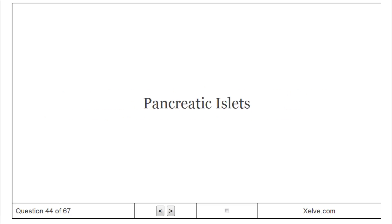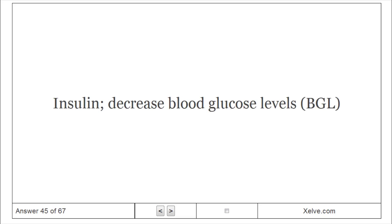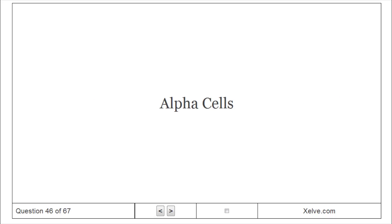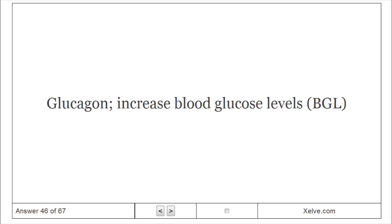Pancreatic islets house alpha and beta cells. Beta cells produce insulin, which decreases blood glucose levels. Alpha cells produce glucagon, which increases blood glucose levels.